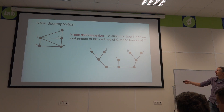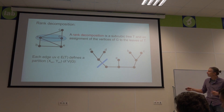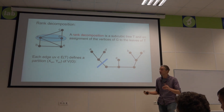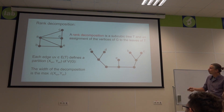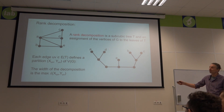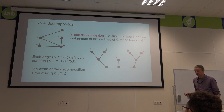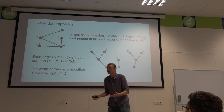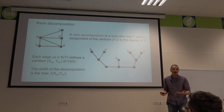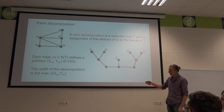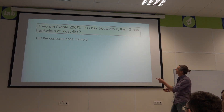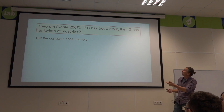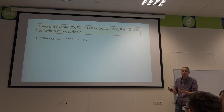Every edge of the subcubic tree defines a partition of the vertices of G. The width of the decomposition is the maximum of the rank of those cuts over all edges of the tree T. This is another way of decomposing with nested cuts — an alternate way of decomposing the graph with a nested series of cuts based on rank rather than cut size.